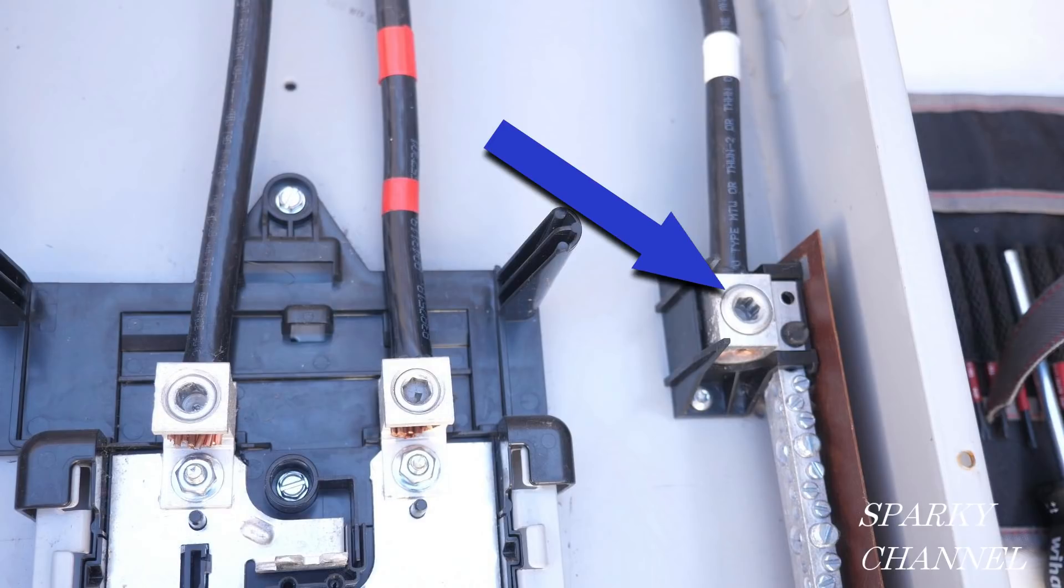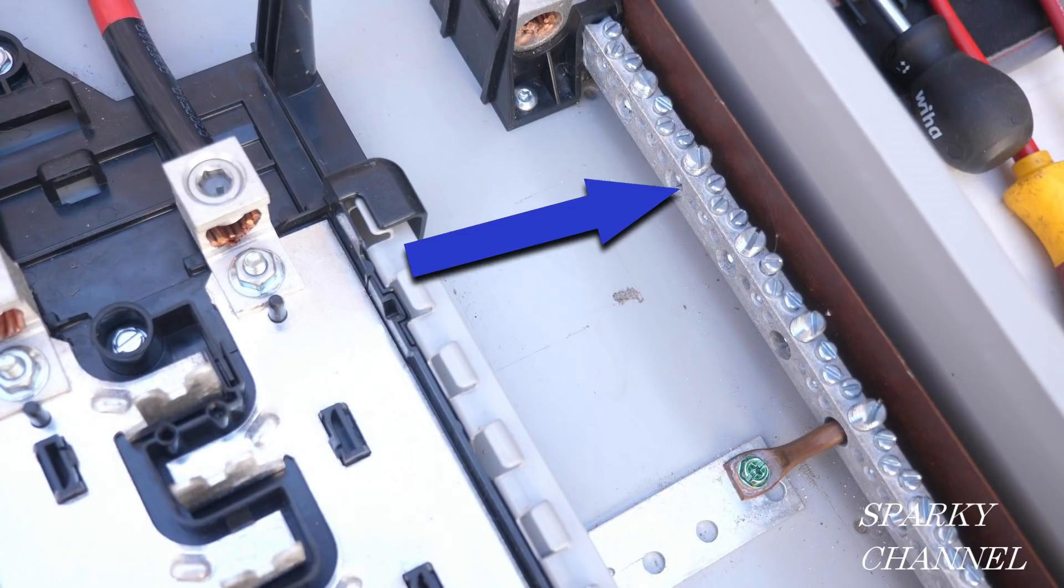This is the neutral lug. Do you notice how it's raised up off of the metal body of the box? This is the neutral bus bar, or commonly we just call it the neutral bar. Notice that it is also elevated off the surface of the panel.